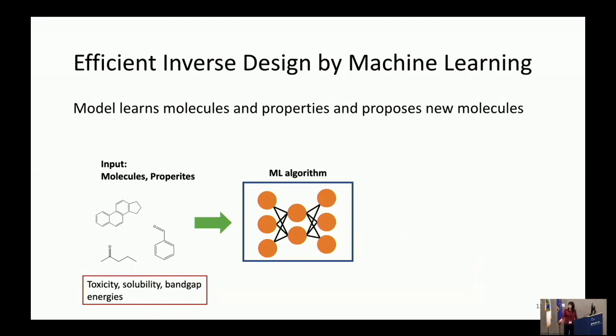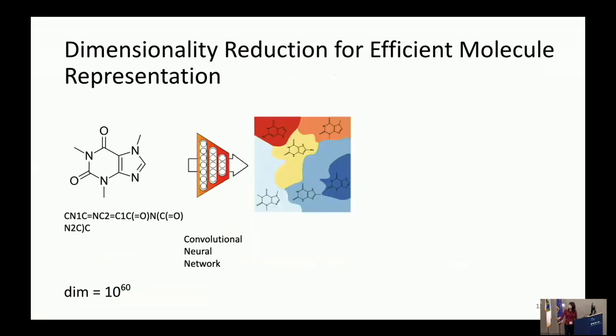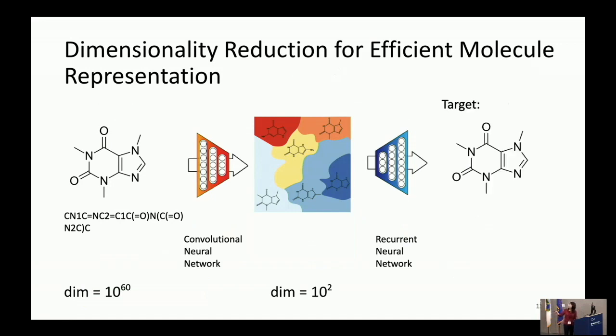The way that this works is we wanted a model where you can feed in both the molecules and the properties to a machine learning algorithm, and then it outputs what it thinks are the best molecules. This takes a couple of steps. The first step really is to be able to compress the representation in molecular space down from 10 to the 60 to something more manageable. The way we did this is by using a variational autoencoder. The first part of it is a convolutional neural network taking in this text representation, and we end up compressing this representation down to an order of 100 dimensions. Then we use a recurrent neural network to decode the latent representation to try to get the same output. So this is focusing on the reconstruction.